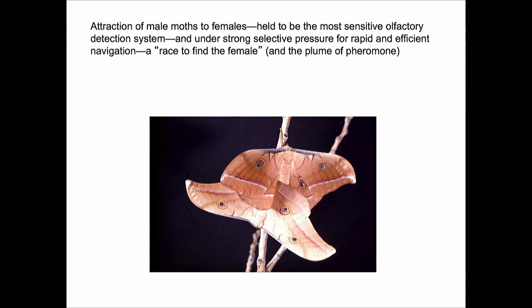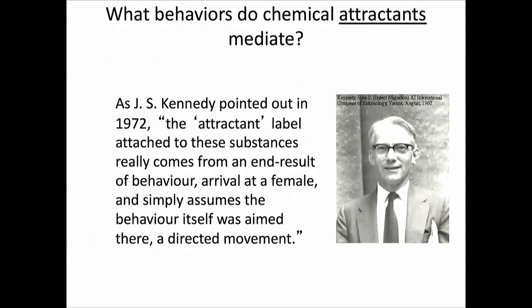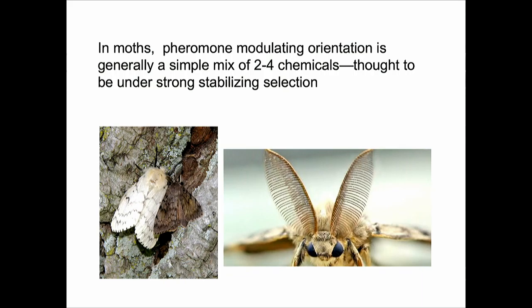In moths, with about 140,000 to 150,000 species, they all use pheromones, and almost all of them use a female-emitted pheromone for the male to find the female. This is thought to be a process under a lot of selective pressure. Michael Greenfield called this a race to find the female, because the first male there is very likely to be the one to mate. So you have to find the plume, and you have to navigate efficiently.